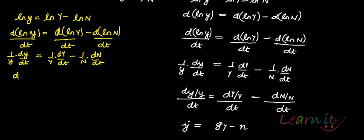So what you have is D small y by small y DT equals D Y by Y DT minus D N by N DT.